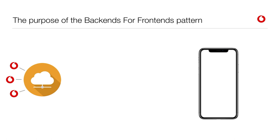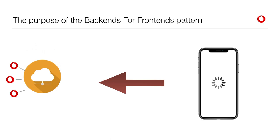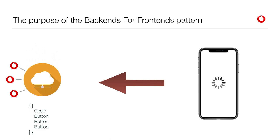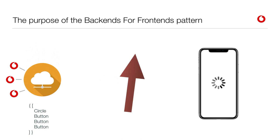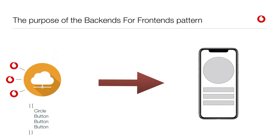So how does this work? We've got an iPhone and the iPhone sends a request to the back-end. The back-end will think about what it should give back to the front-end. The back-end for front-end generates the view hierarchy and gets the data from — in this example — Vodafone back-ends, which could be multiple, and generates a hierarchy and sends that back to the front-end. The front-end then displays that. In this example we've got a circle and three buttons that the back-end generated and the front-end just displays those elements.